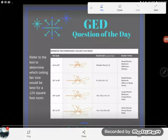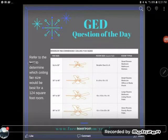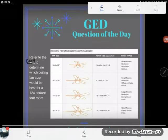It says refer to the, well it says refer to the test but I'm fairly certain I meant refer to the chart. Don't know how I got test out of that. Refer to the chart to determine which ceiling fan size would be best for a 124 square foot room. Notice that it doesn't say a 124 feet room.